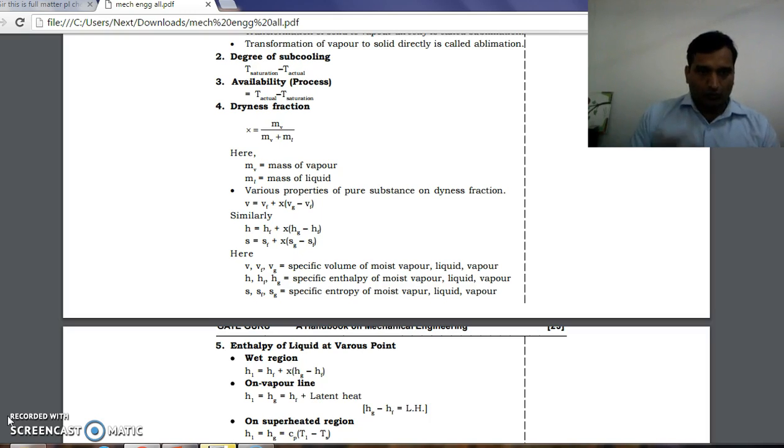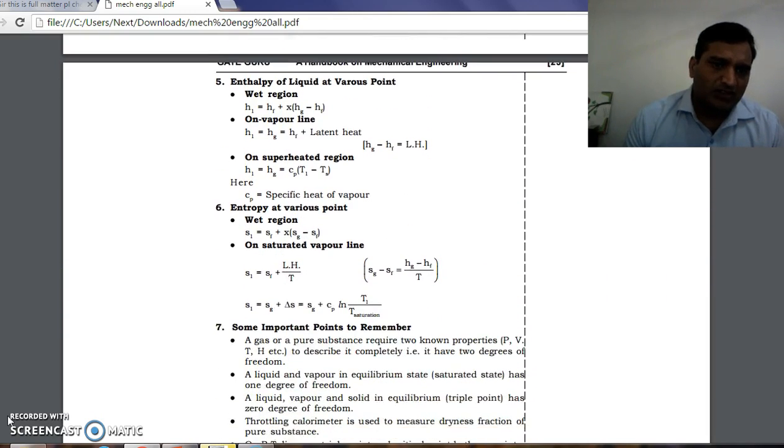Now if we will see enthalpy of liquid at various points: in wet region, on vapor line, and in superheated region. In wet region where steam is wet, enthalpy at that point is equal to h_f plus x times (h_g minus h_f), which can also be written as h_f plus x·h_fg. The values of these enthalpy, entropy, and specific volume can be directly seen from the steam table at particular temperature and pressure.